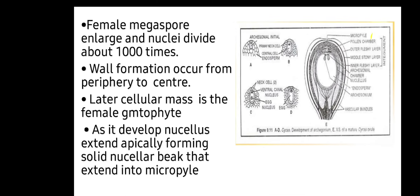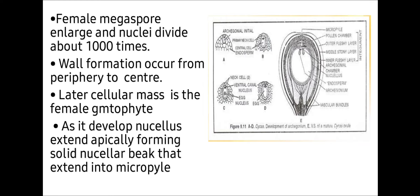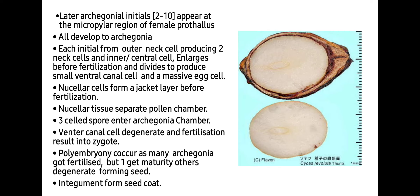As the female gametophyte develops, the nucellus extends apically forming a solid nucellular beak that extends into the micropyle. Each archegonial initial appears at the micropylar region of the female prothallus and all develop into archegonia. Each initial from the outer neck produces two neck cells and inner central cells. Before fertilization, the central cell enlarges and divides to produce a small ventral canal cell and a massive egg cell. Nucellus cells form a jacket layer before fertilization. Nucellus tissue separates the pollen chamber. Three cells pour into the archegonial chamber; ventral canal cells degenerate and fertilization results in a zygote.